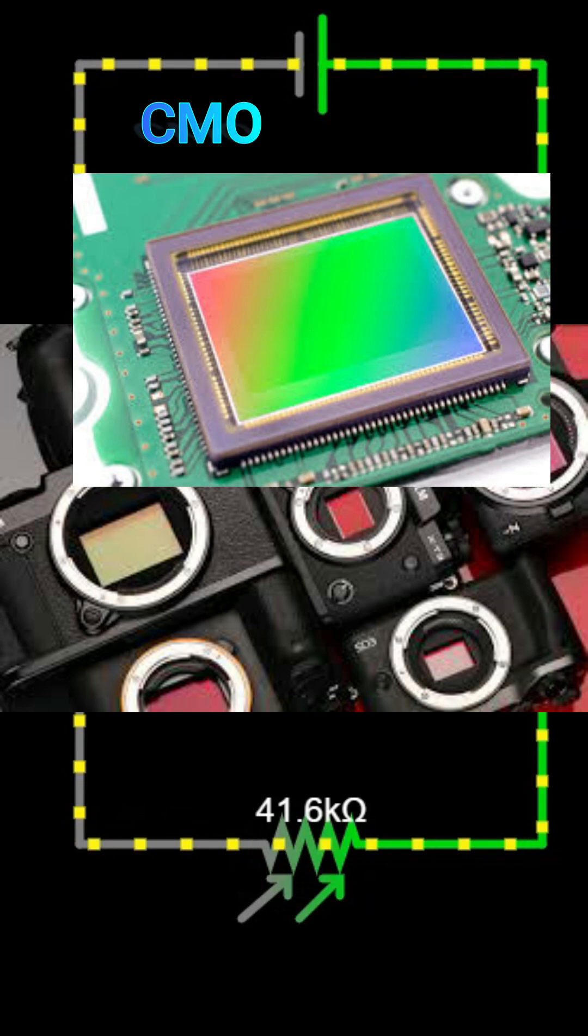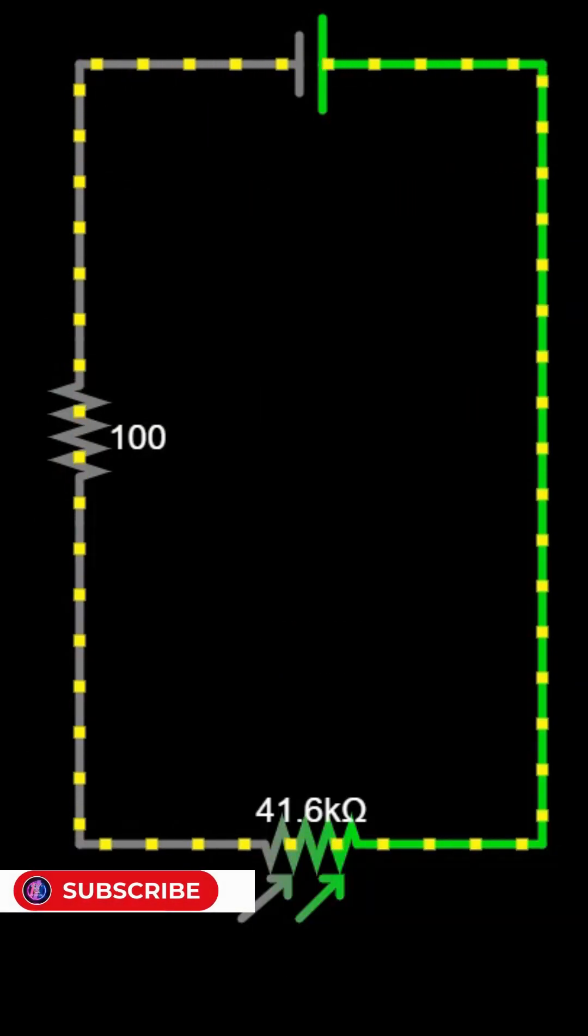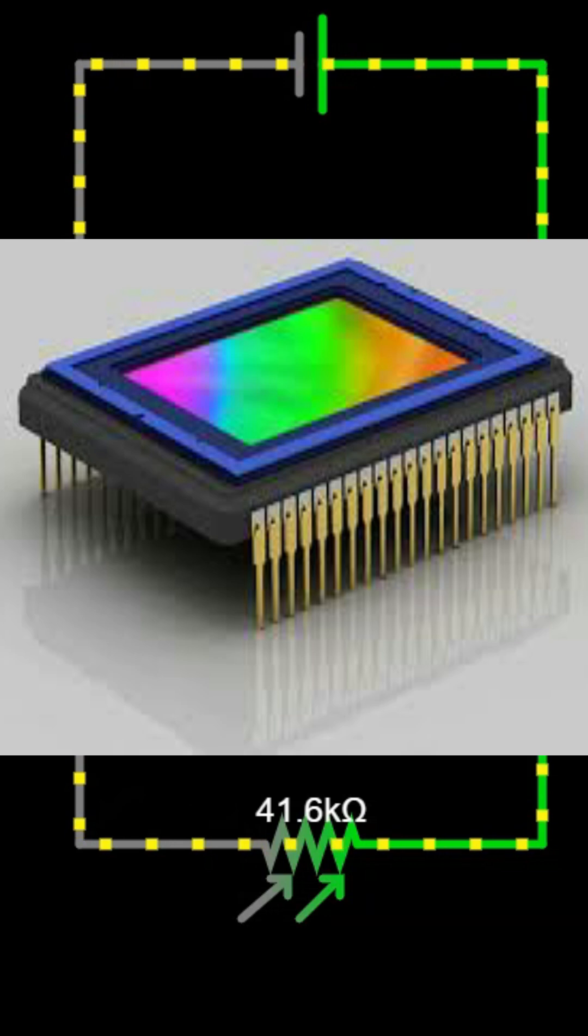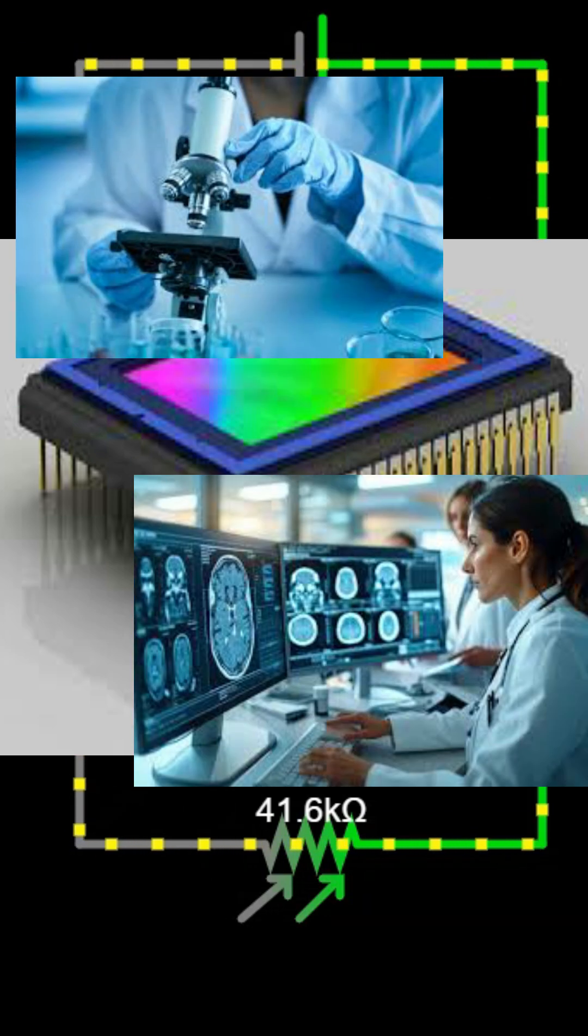Most modern sensors are either CMOS or CCD. CMOS sensors are faster, use less power, and are used in phones and DSLRs. CCD sensors are extremely accurate and are used in scientific and medical imaging.